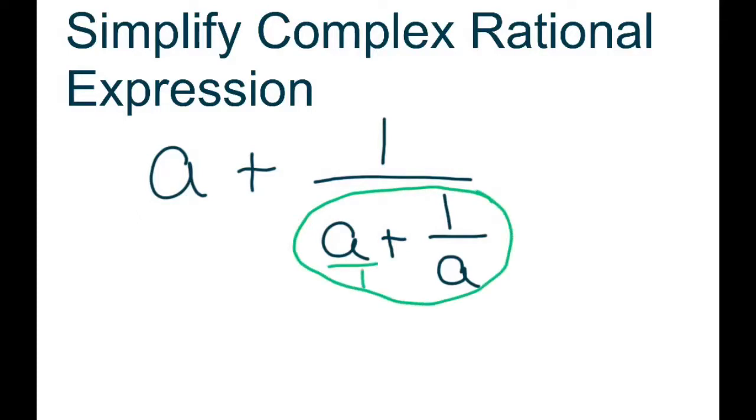And if I write this a over 1, my common denominator will be a. So you can kind of cross through the butterfly here, and that's going to be a squared plus 1.